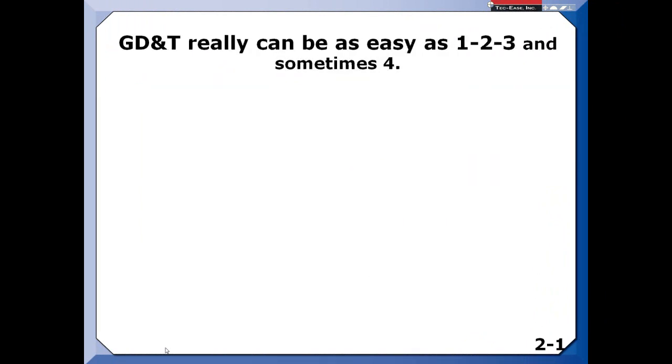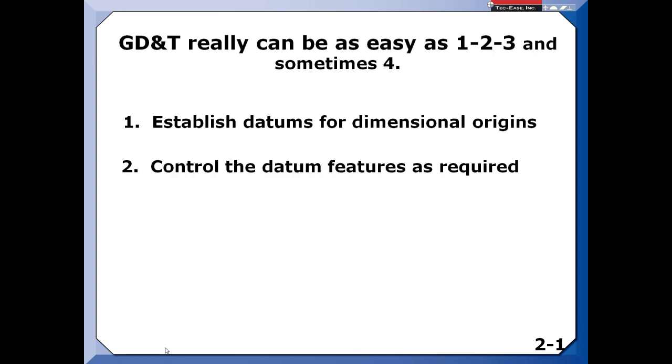In fact, it can be as easy as 1, 2, 3, and sometimes 4. On nearly all of your parts, you need to establish origins of measurement. We do that by selecting datum features that are used to establish datums. Because these datum features are features, they need to be controlled, so we put tolerances on those features. That's really been clarified in the 2009 revision of the standard.